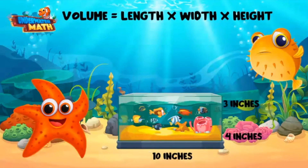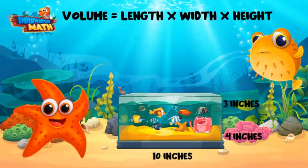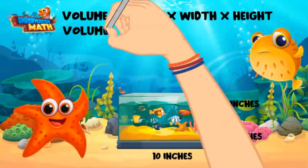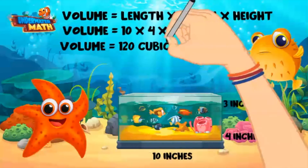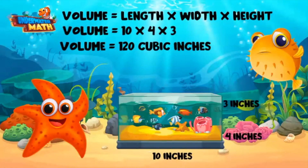The fish tank has a length of 10 inches, a width of four inches, and a height of three inches. If we know the dimensions, we can just plug them into the formula to calculate volume. All right — the formula is length times width times height: 10 times 4 times 3 is 120 cubic inches. Check me out, I'm a volume rock star!